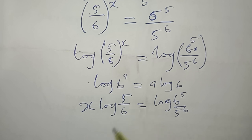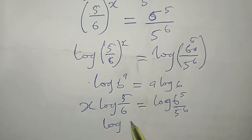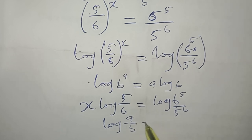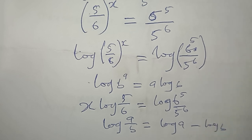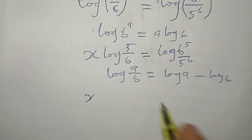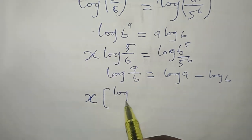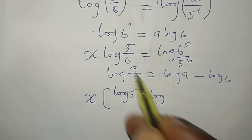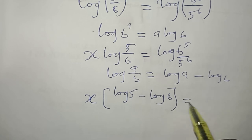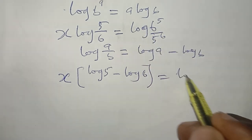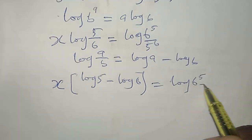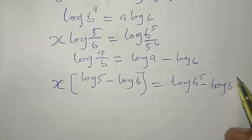Next, I apply the log quotient rule, which says log(a/b) equals log a minus log b, to both sides. The left hand side becomes x times (log 5 minus log 6). On the right hand side, applying the same rule and the power rule gives 5 log 6 minus 6 log 5.